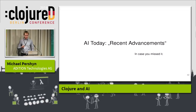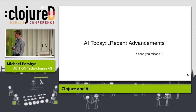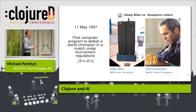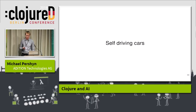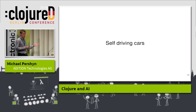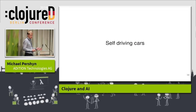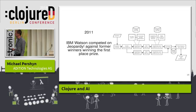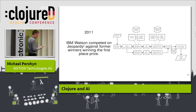In case you missed the progress, here are some notable things from recent years. In 1997, AI defeated world chess champion Garry Kasparov in a chess tournament. There are self-driving cars on the streets — every major automotive company and every big IT company invests in self-driving cars. In 2011, IBM Watson won a Jeopardy game. Its architecture is not a neural network, and it's written partially in Lisp and Prolog.